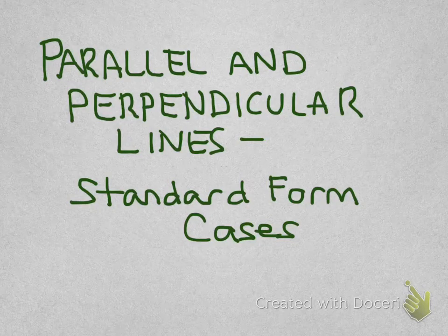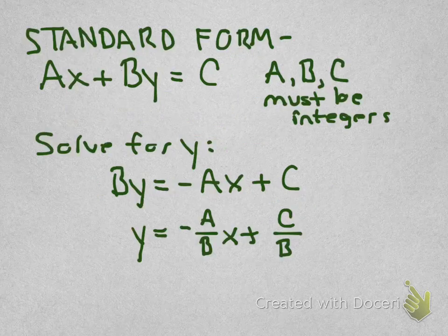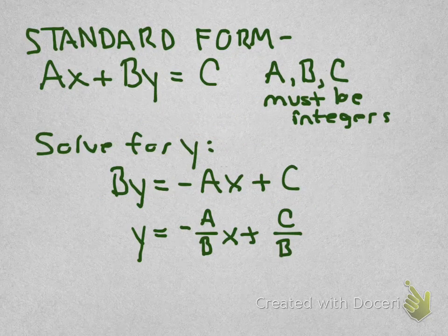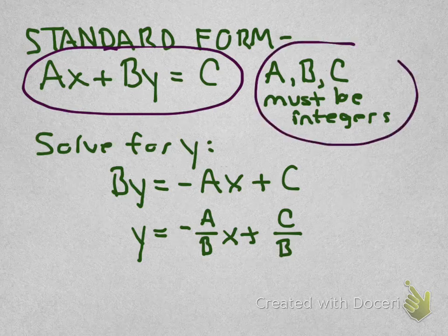In this video, we're going to take a look at parallel and perpendicular lines, specifically lines that are in standard form. If you understand how standard form operates and you're comfortable with slope, you're actually going to find that these problems are a little bit easier. Let me show you what I mean. First of all, standard form we know is Ax + By = C, and A, B, and C must all be integers.